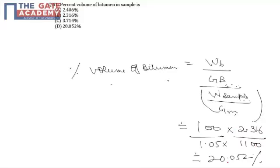So it comes out as 20.052 percent, making D as the correct answer. Students may refer for further reading on the topic of Marshall Mix Design in chapter Pavement Materials.